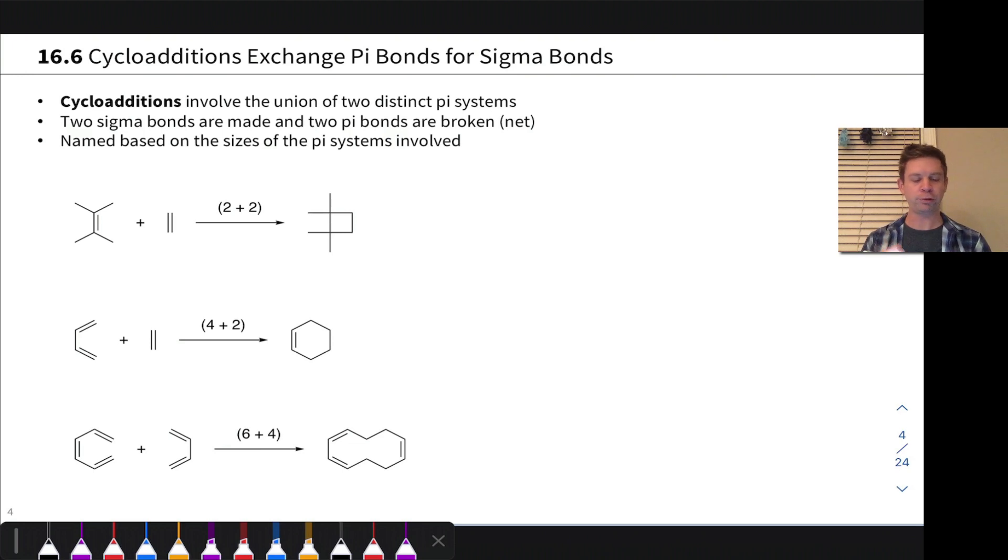So for example, a two plus two involves two alkenes coming together to form a four-membered ring. And so here, for example, we have one of those highlighted in red, one highlighted in blue. We get those two coming together and the new sigma bonds are here and here. Electrons move, for example, from there to there and from this pi system back to the other carbon.